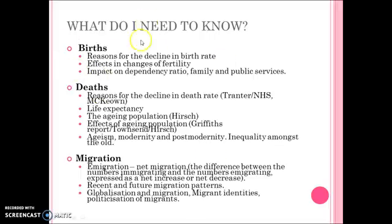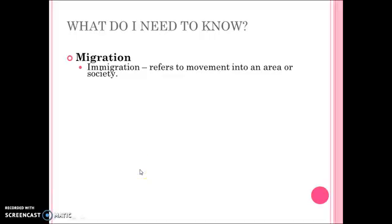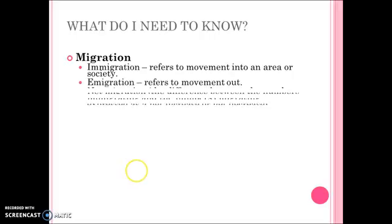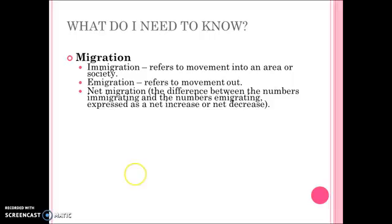There are already births and deaths video tutorials on Moodle, so this one focuses on migration. Migration has never been asked as an exam question, so it's worth covering. Migration is the movement of people — immigration is movements into an area, emigration is movements out of an area, and net migration is the difference between the numbers immigrating and emigrating, resulting in either a net increase or decrease.